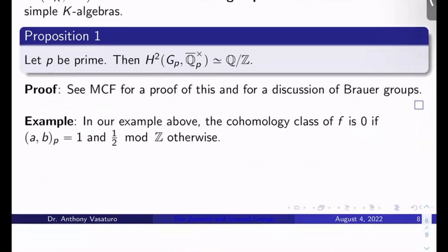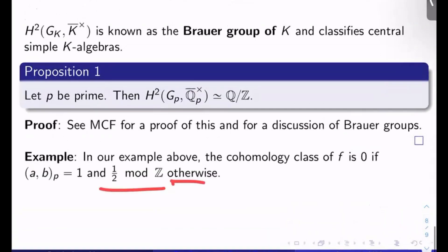In our example above with the Hilbert symbol, the cohomology class of f is zero if (a,b)_p = 1, and it's ½ mod Z otherwise, because it's of order two and the second cohomology group is isomorphic to Q/Z, so it must be ½ mod Z. We'll push on and talk about the first cohomology group next video. Thanks for watching and I'll see you then.